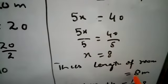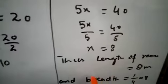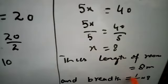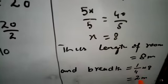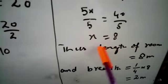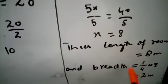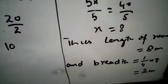And breadth 1/4 of X, putting X equals 8, we have 1/4 into 8 gives 2. So length of the room is 8 meters and breadth of the room is 2 meters.